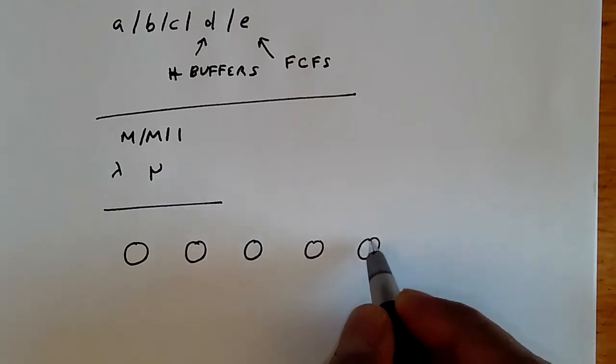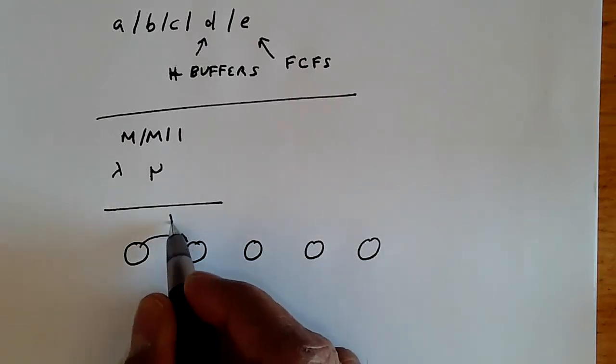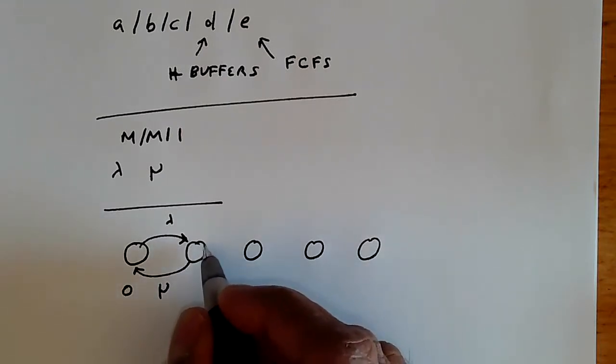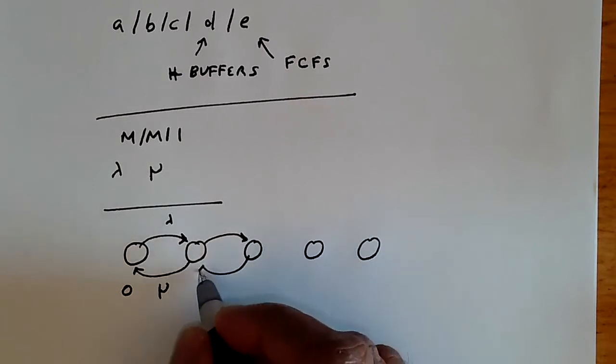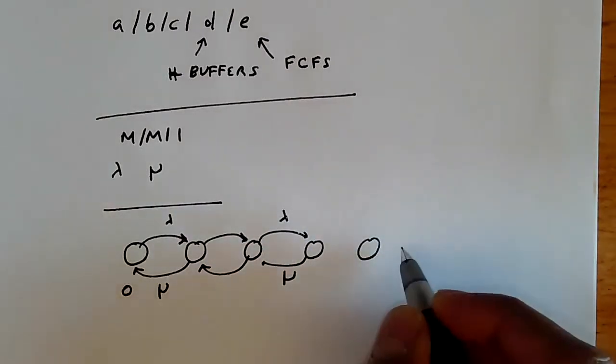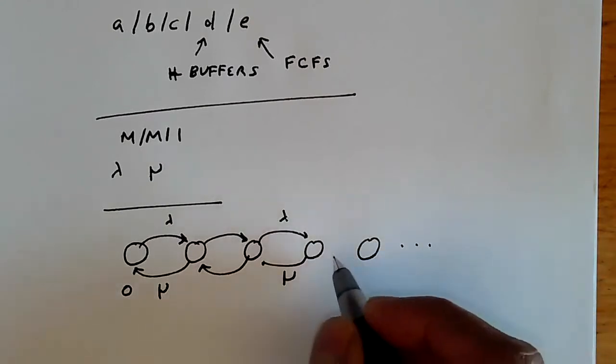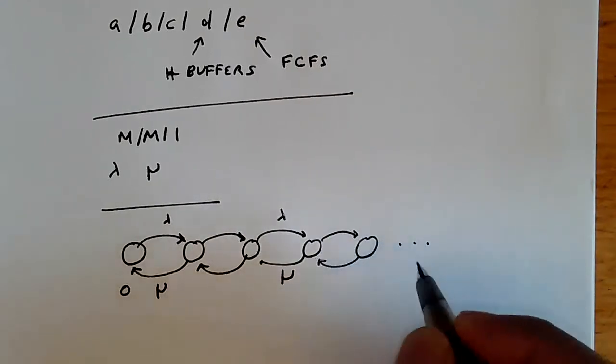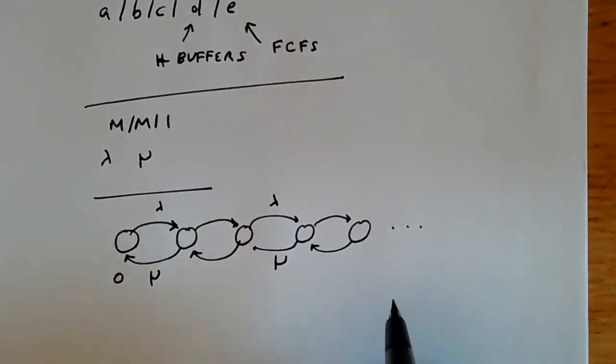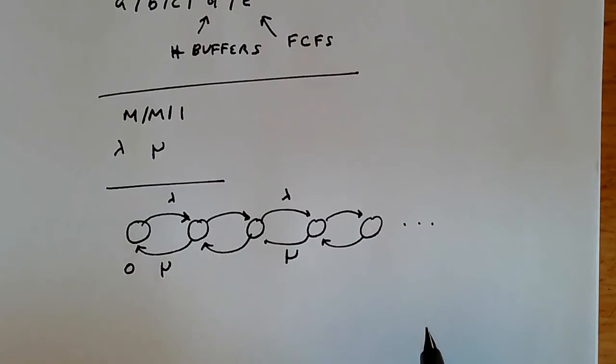In the MM1 queue, we have arrivals at rate lambda, departures at rate mu. This is the queue with zero customers in it, zero jobs in it. We are state independent, so we always have lambda going up and mu coming down. This could be infinite or in some cases bounded. In the MM1, the basic case, we assume it is an infinitely long queue.